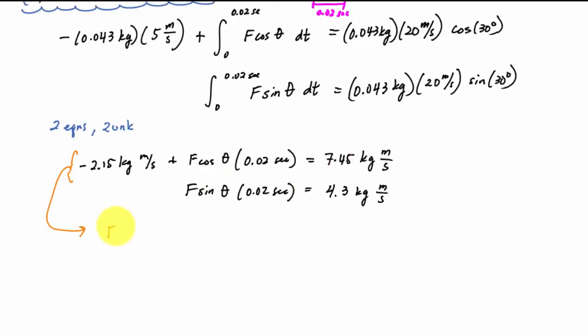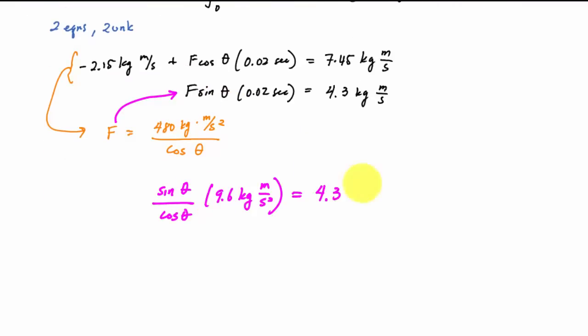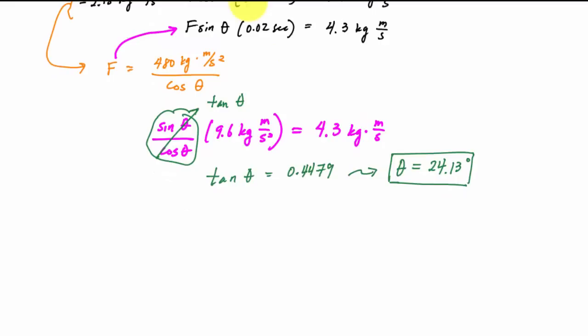So from this equation I get that F is equal to 470 kg m/s over 0.02 seconds, and if I take this and substitute this into the second equation here I will get that sine theta over cos theta - we know that sine theta over cos theta is just tangent theta - and if I take the inverse tangent this will tell me that theta, the angle at which the ball is being kicked with that force, is 24.13 degrees. I can just take this theta, plug it back into one of the equations, and I can find my force.